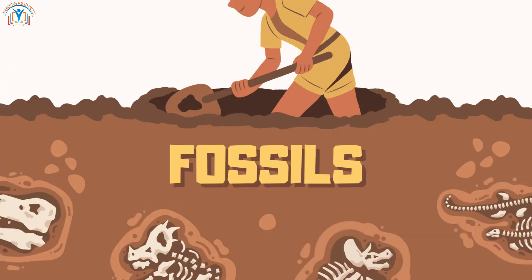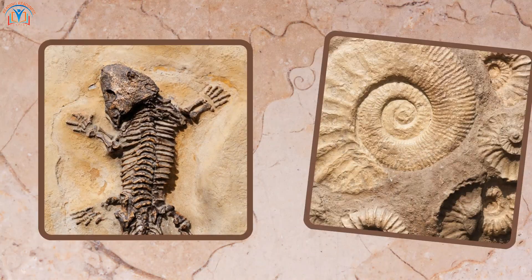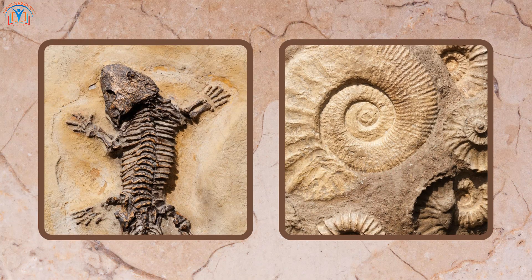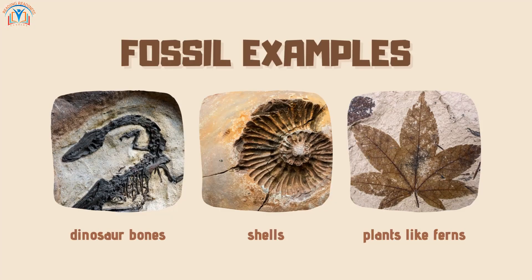Last but not least, let's uncover the world of fossils. Fossils are the preserved remains of plants and animals from long ago. They give us clues about what life was like millions of years ago, helping scientists learn about Earth's history and evolution. Some examples of fossils are dinosaur bones, shells, and even ancient plants like ferns.